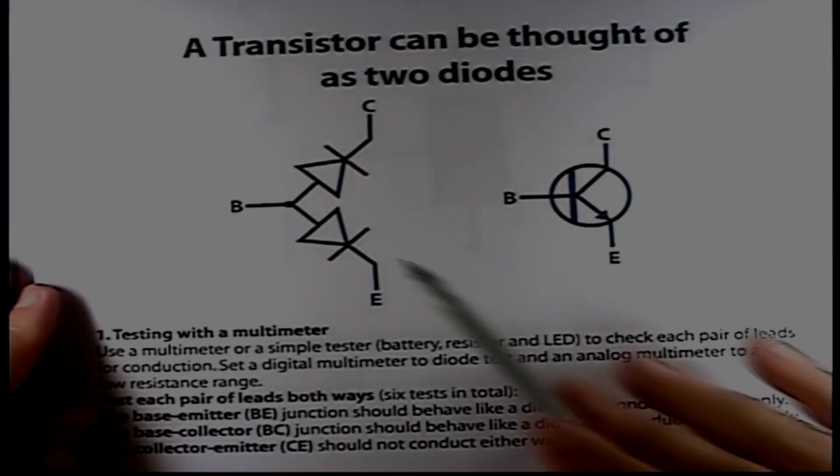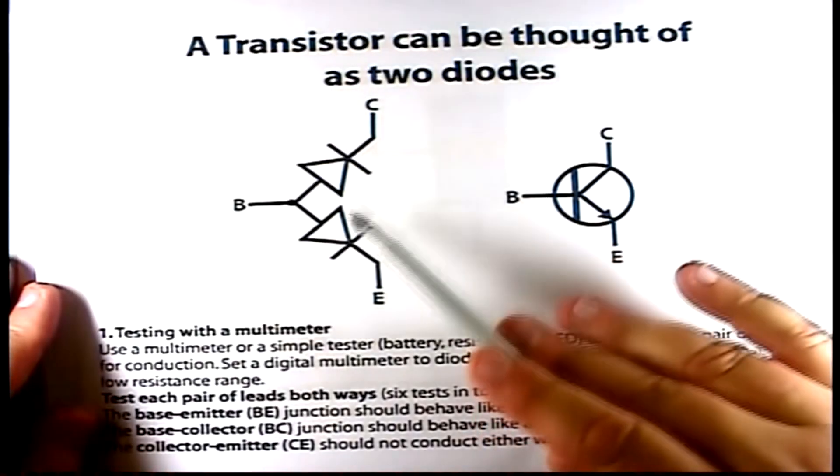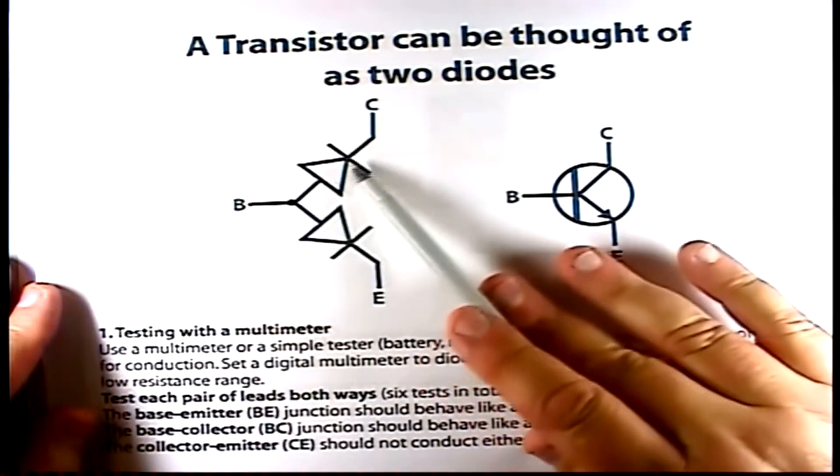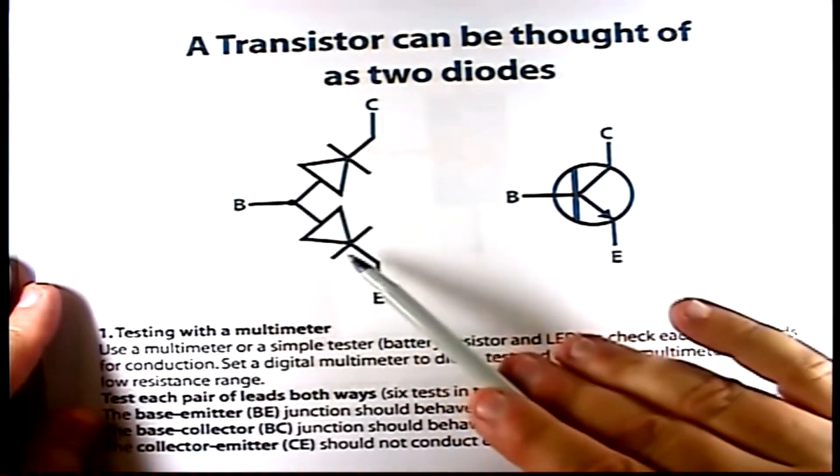One thing I like to think about with a transistor is thinking of it as two diodes. You can't just stick two diodes together and make a transistor because there's a magic that occurs with the way the dopants are used and the size of their regions to allow amplification. But when you're testing a transistor, you can think of it as two diodes. I've got two diodes here connected with a collector, a base, and an emitter, and it matches up with this transistor.